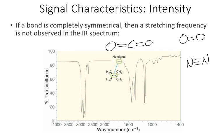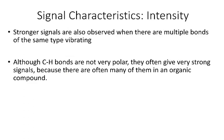Another factor affecting peak intensity is that we get stronger signals when there are multiple bonds of the same type vibrating. So although carbon–hydrogen bonds are not very polar, because we often have many of them, they may still give high intensities in our IR spectrum.